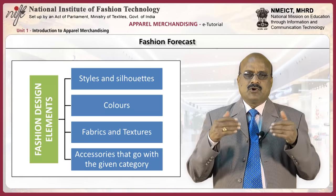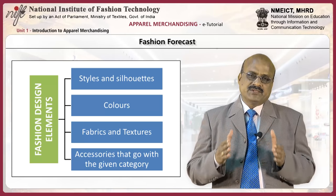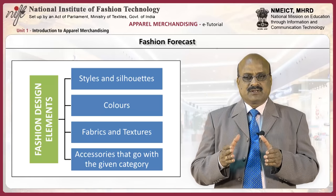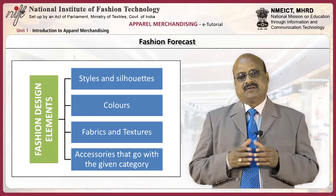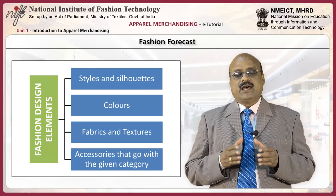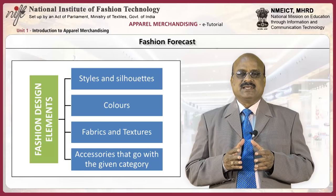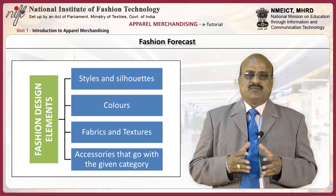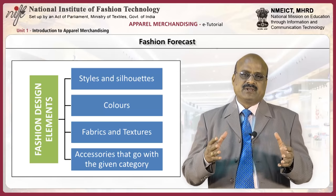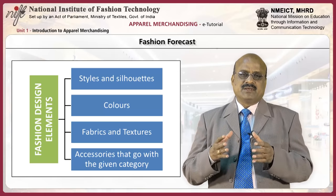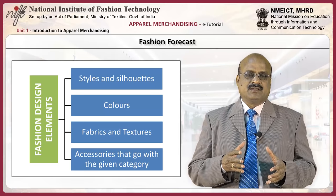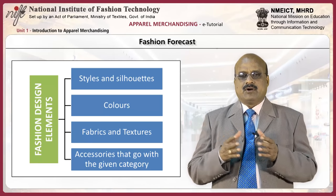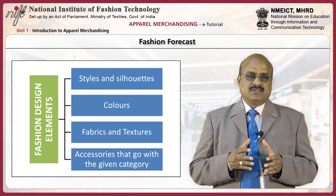The fashion design elements are: styles and silhouettes, colors, fabrics and textures, and accessories that go with the given category. The fashion forecast is made for each product category, such as menswear, womenswear, etc., and for a particular season and year — for example, menswear spring-summer 2016, or menswear winter-autumn 2016.